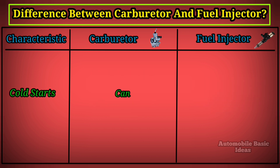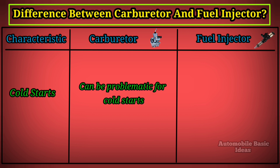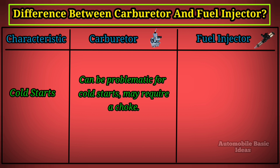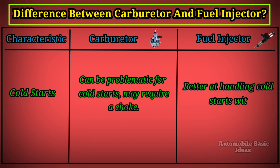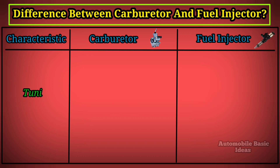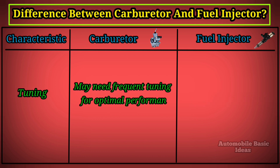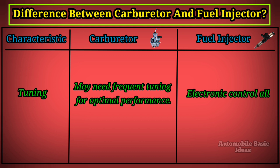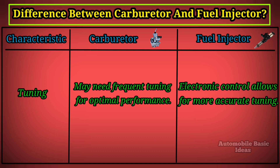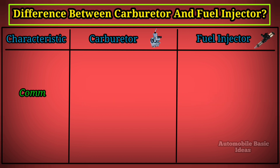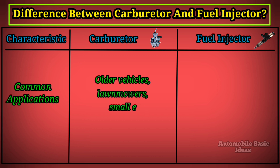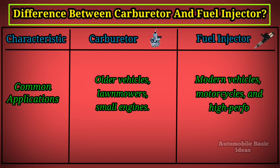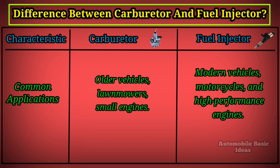Cold starts: carburetors can be problematic for cold starts and may require a choke, while fuel injectors are better at handling cold starts without a choke. Tuning: carburetors may need frequent tuning for optimal performance, whereas electronic control in fuel injectors allows for more accurate tuning. Common applications: carburetors are found in older vehicles, lawnmowers, and small engines; fuel injectors are used in modern vehicles, motorcycles, and high-performance engines.